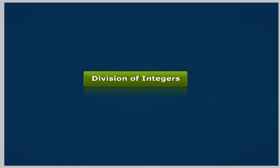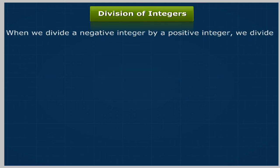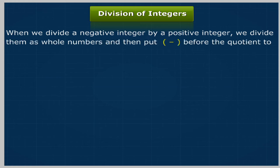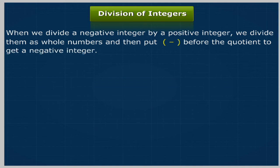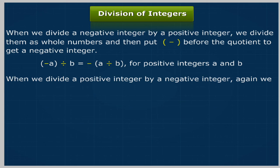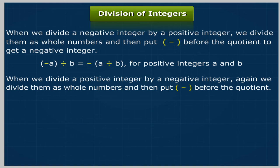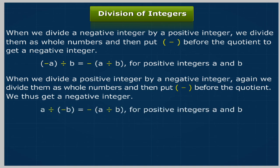Division of integers: When we divide a negative integer by a positive integer, we divide them as whole numbers and then put a minus sign before the quotient to get a negative integer: -a ÷ b = -(a ÷ b) for positive integers a and b. When we divide a positive integer by a negative integer, we again divide them as whole numbers and then put a minus sign before the quotient: a ÷ (-b) = -(a ÷ b) for positive integers a and b.